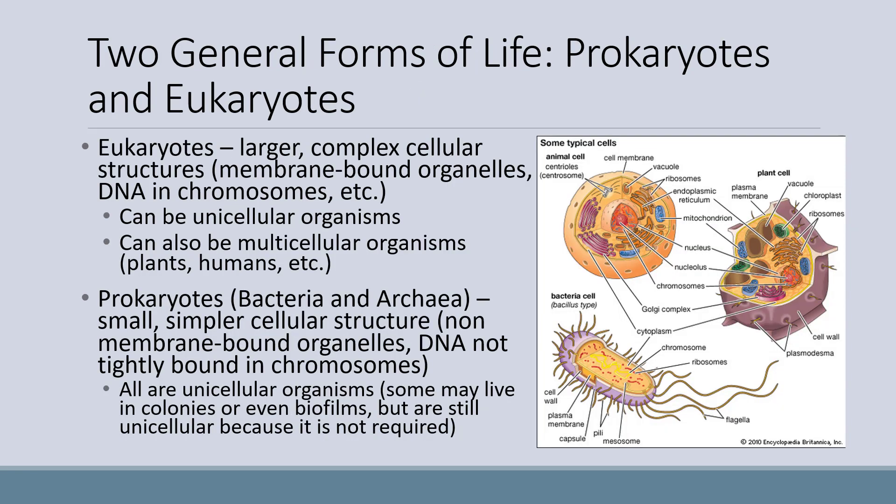Now we're going to talk a little more about the forms that life takes, and how it got started on Earth. There are two general forms of life on this planet: prokaryotes and eukaryotes. Eukaryotes are larger, with complex cellular structures, such as membrane-bound organelles, DNA and chromosomes, and so on. They can be unicellular organisms — meaning they are microbes, just bigger microbes — but they can also be multicellular organisms, like plants or humans.